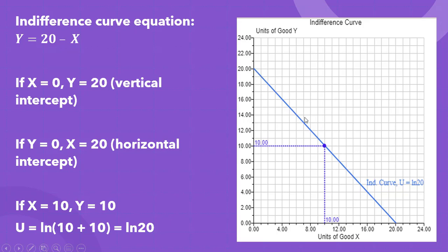And again, this line here shows all combinations of x and y that give this consumer a given level of utility equal to the natural log of 20. All right, that's it.